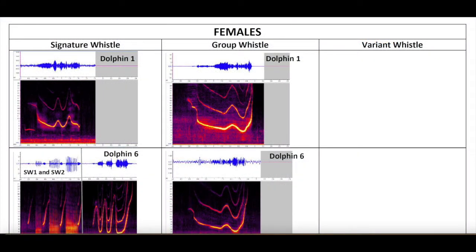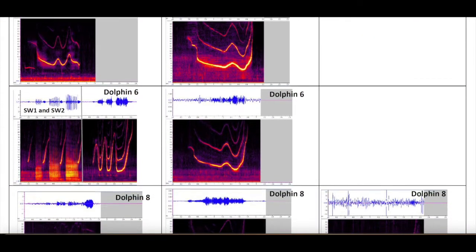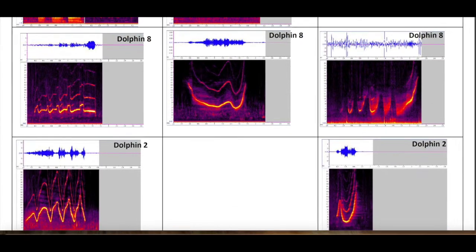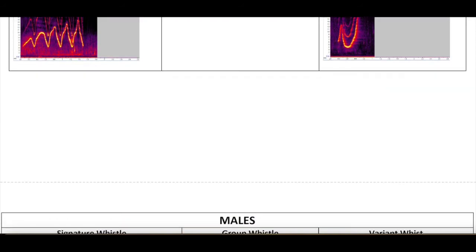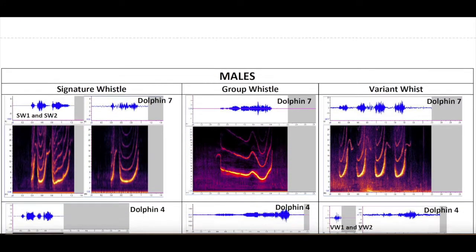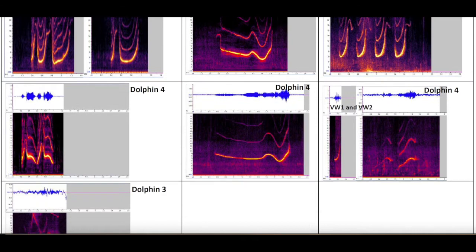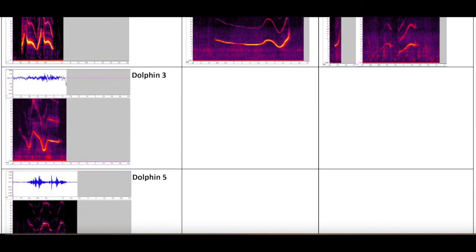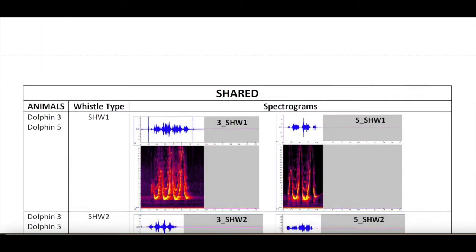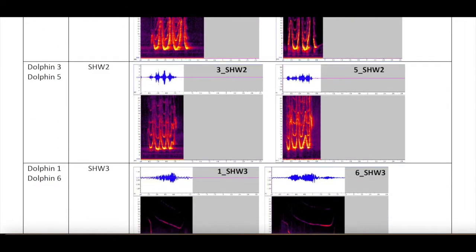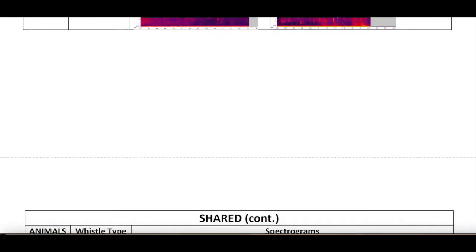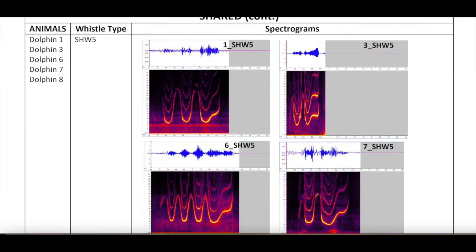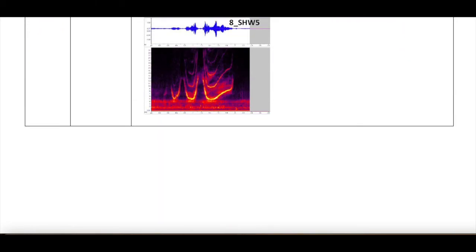In order to even begin to assess whether we could successfully use this same approach with dolphins, the first thing we needed to do was find out what our dolphins sound like when they are healthy. We needed to identify the vocal repertoire of our dolphins, identify what kinds of whistles they make, how commonly they make them, what whistle contours are shared among more than one of our dolphins, and what are the main acoustic characteristics of all those common whistles.